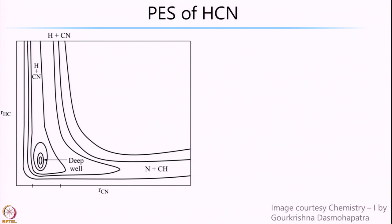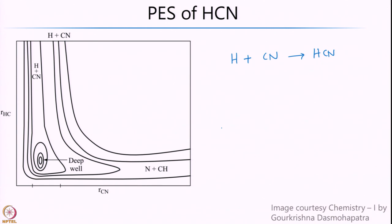Having learnt this about H3 kinds of systems, we will go ahead and look at other kinds of systems. A classic case is the potential energy surface of the HCN, or H plus CN system, where you see the potential energy surface of HCN. We are looking at H plus CN giving HCN. The coordinates we need to vary are the distance between H and C, that is RCH, and the distance between C and N, that is RCN, when they come in a collinear fashion.